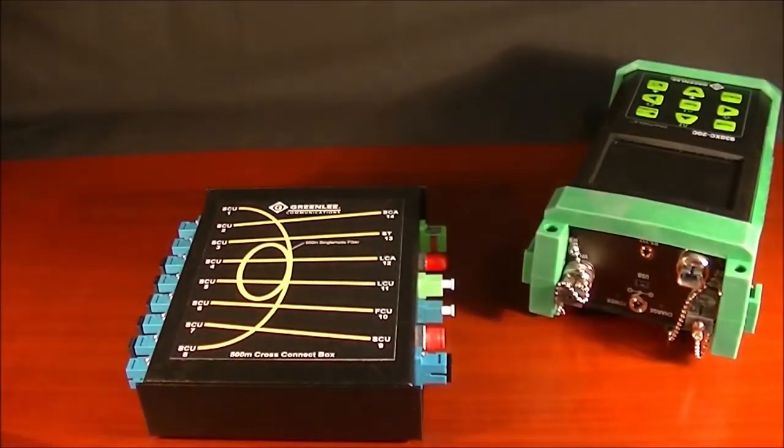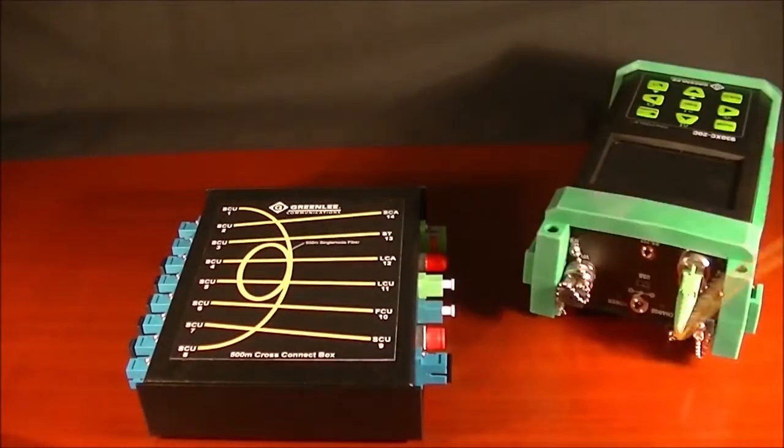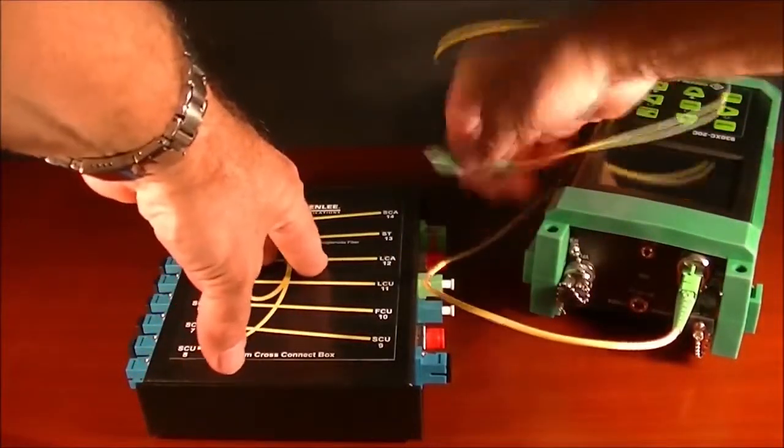Since this is an angle polished bulkhead, we'll use the green angle polished connectors and connect it to port 14 of the cross connect box.